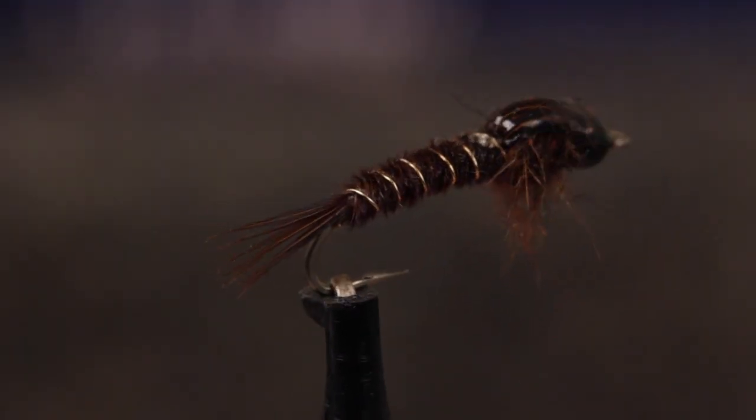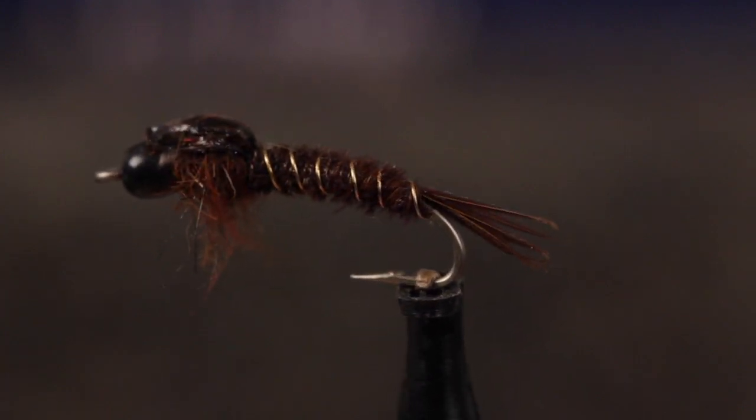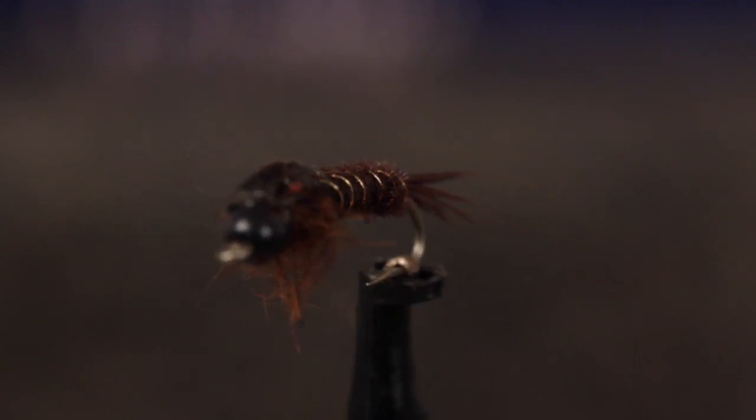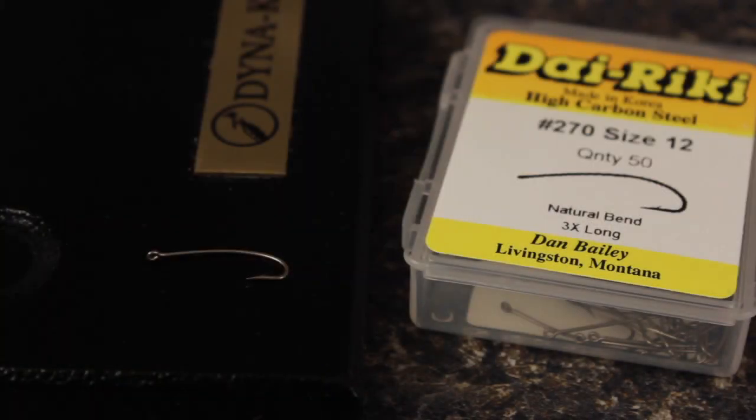This is a weighted Isonychia nymph. Like many of the patterns I tie, it's kind of a mashup between a pheasant tail and a hare's ear in terms of materials and techniques. For a hook, I like a Dairiki number 270 in a size 12.